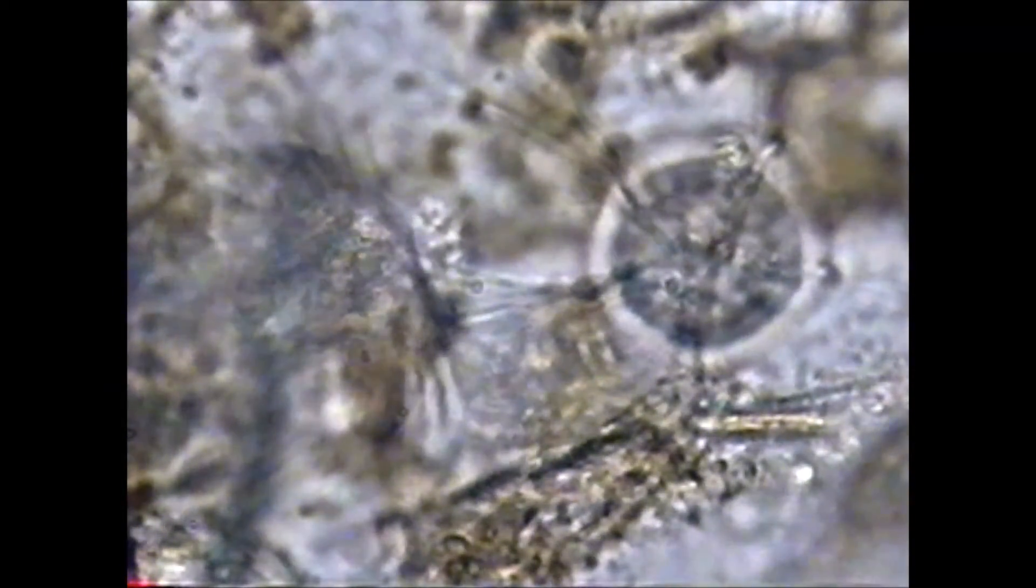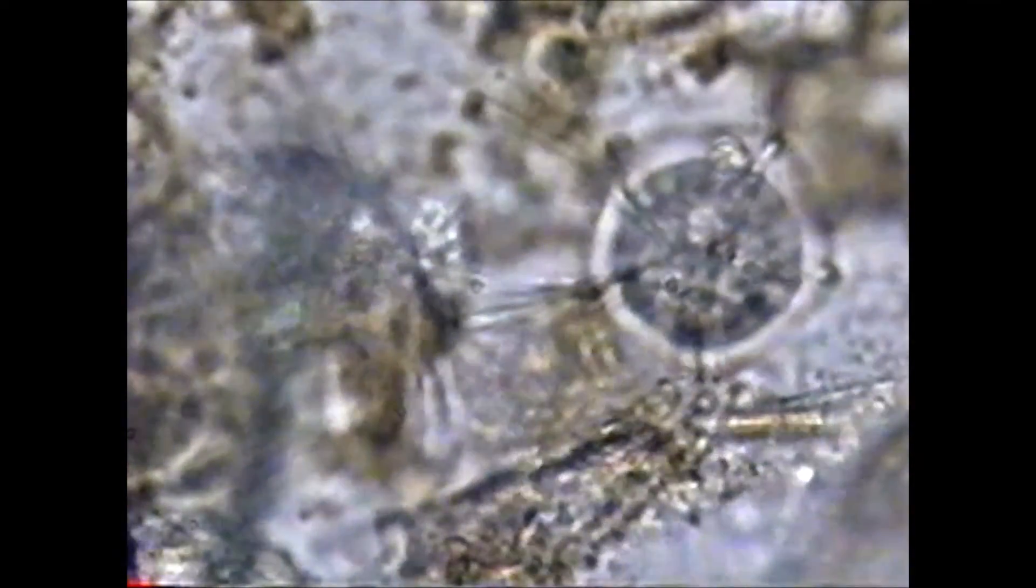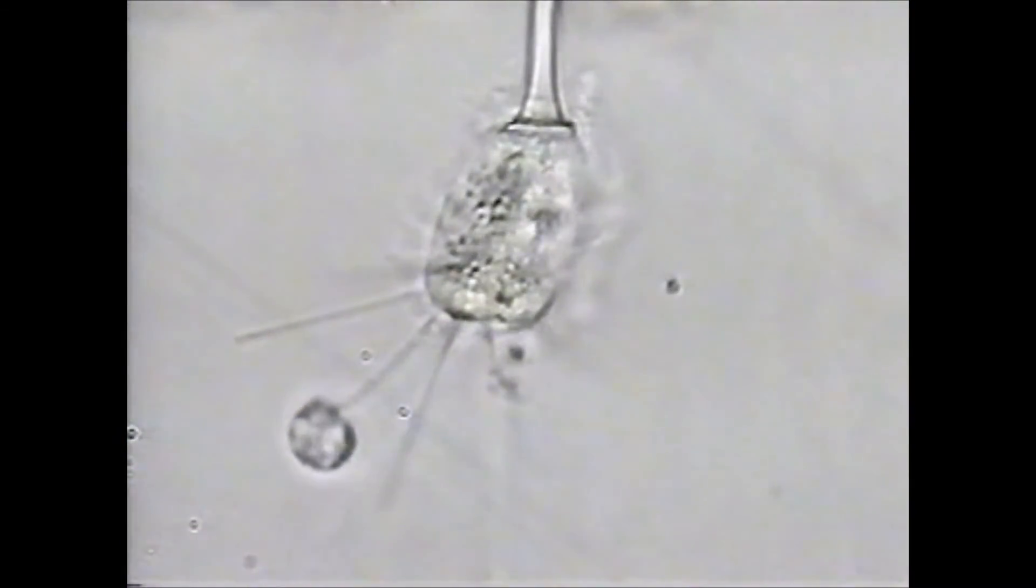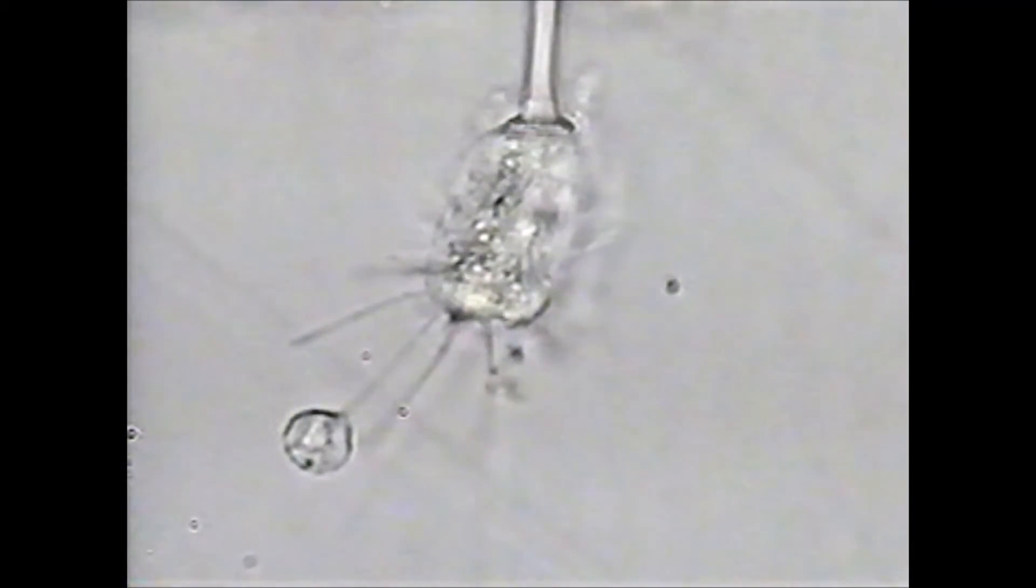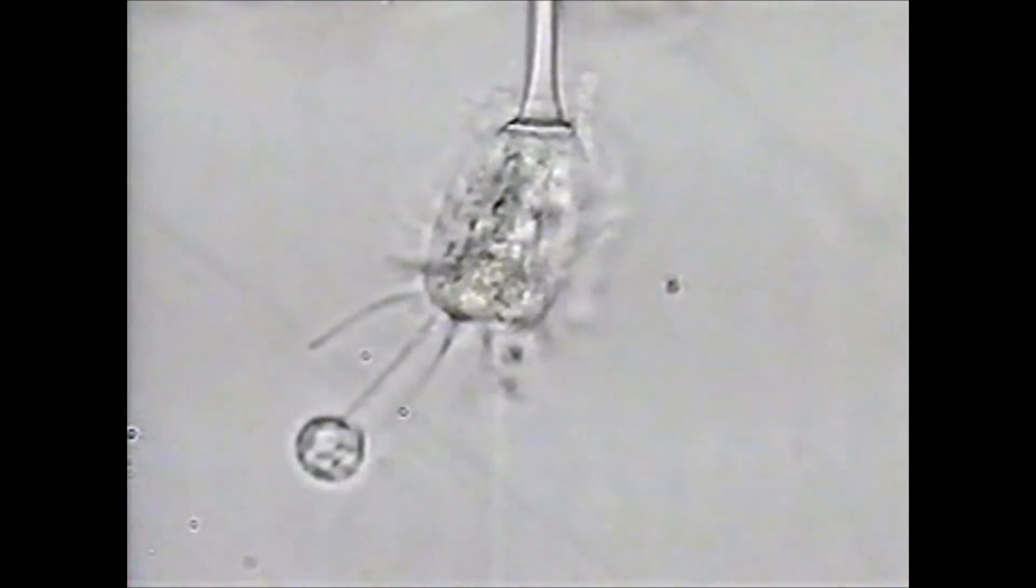Some have a stellate lorica or shell. Another one with prey. Another one with prey tentacles.